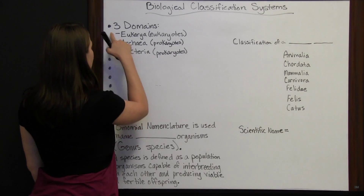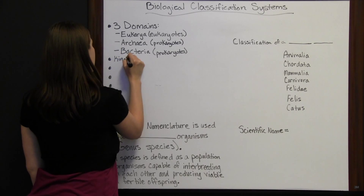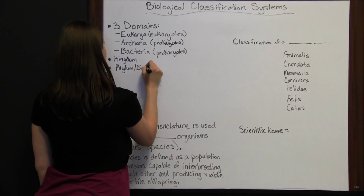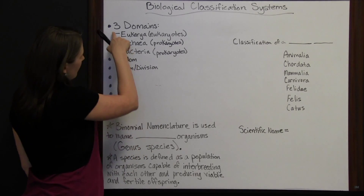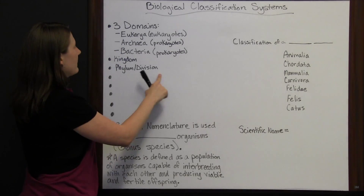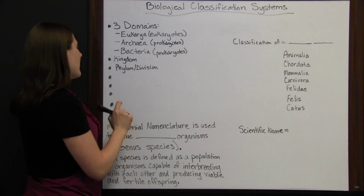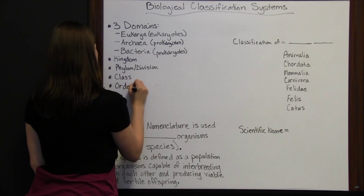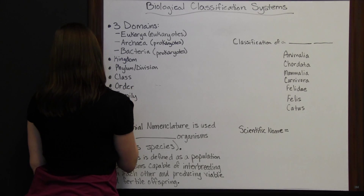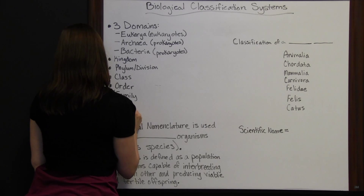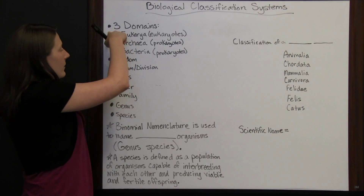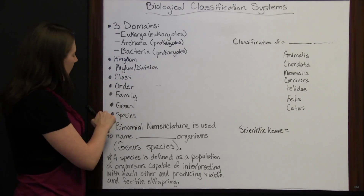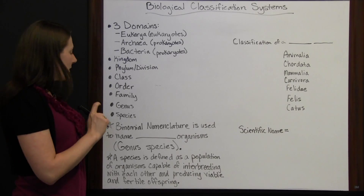After domain, you've got kingdom, phylum, or division. Phylum is going to be referred to in Eukarya, while divisions are referred to more in the Archaea and Bacteria domains. Then you have class, order, family, genus, and species. Species is the most specific, where the domains are the most general — domains hold everything that fits under that category, while each species holds just a small, very specific organism.